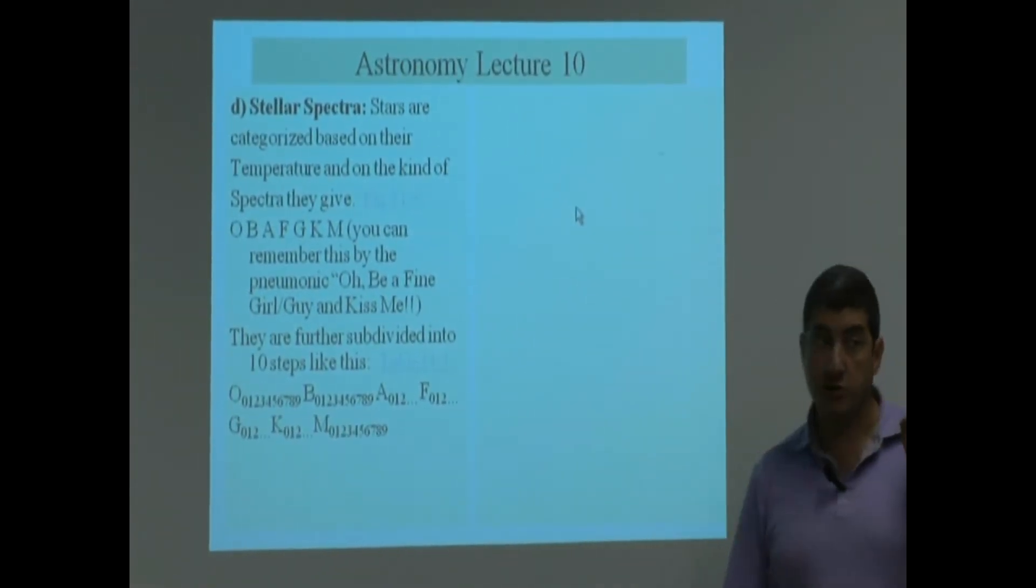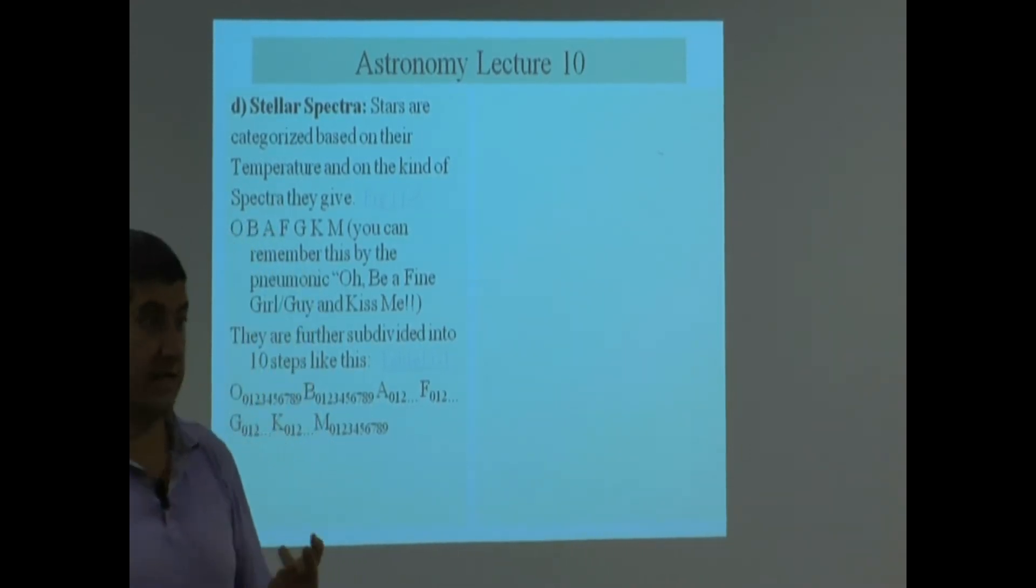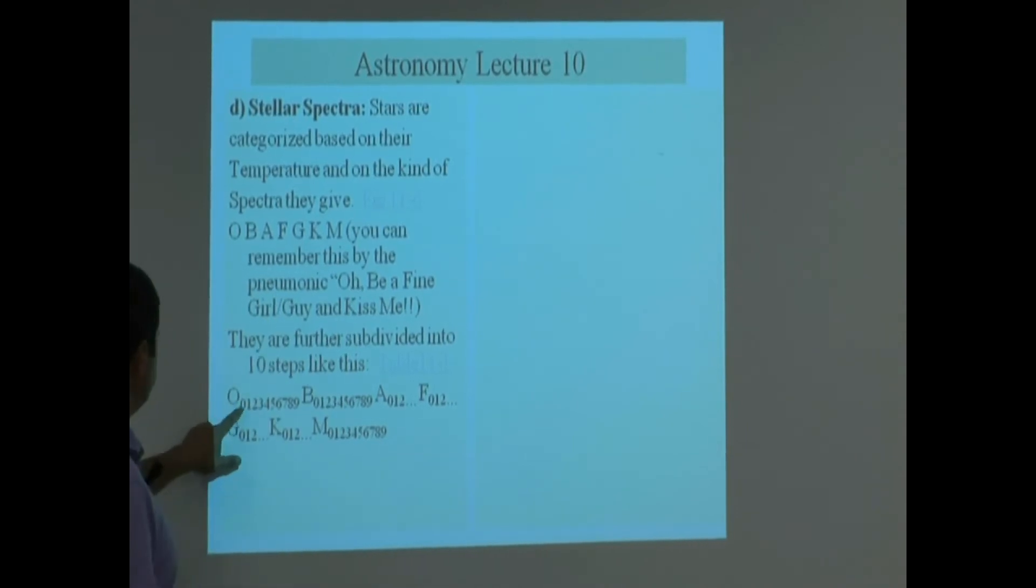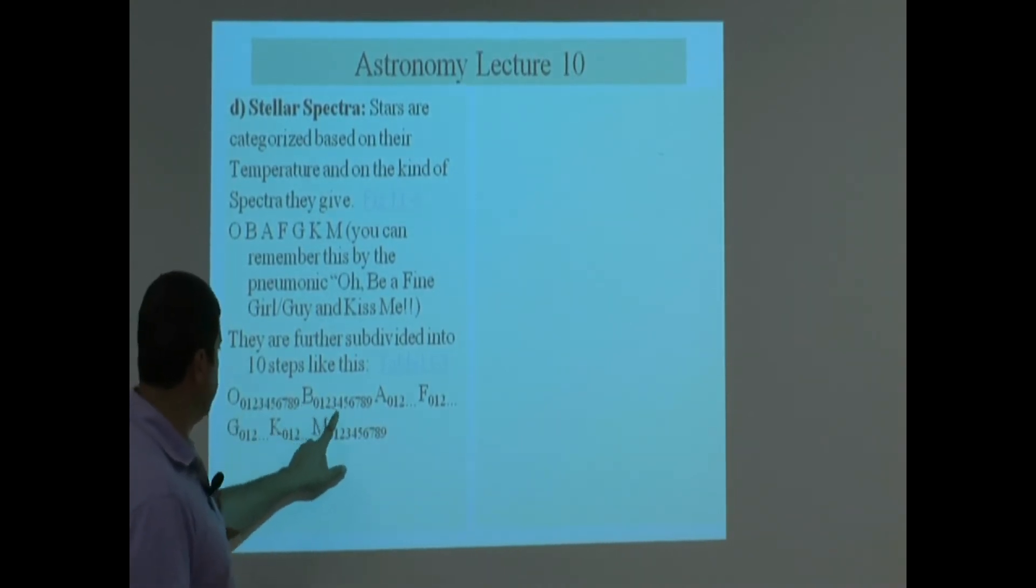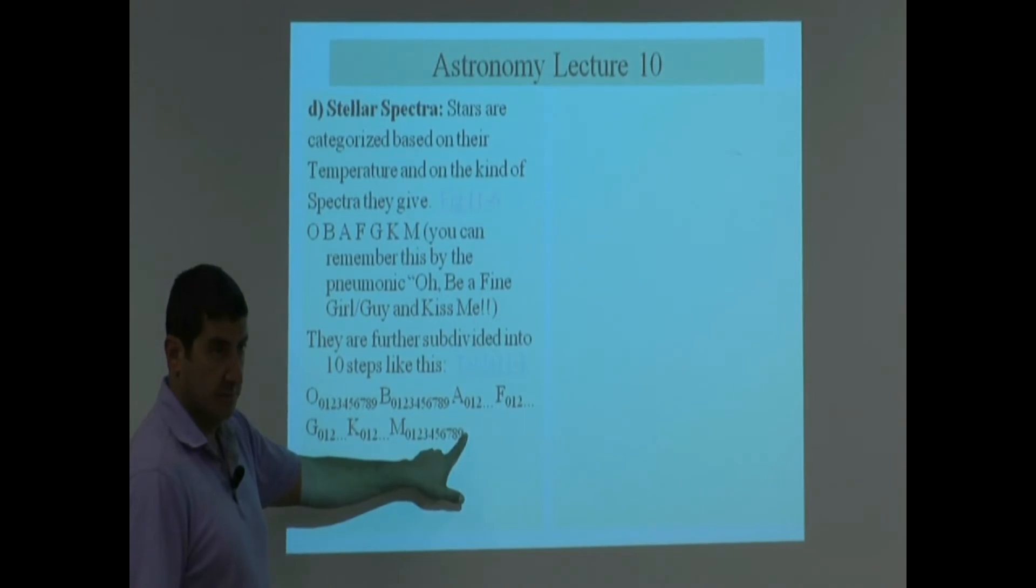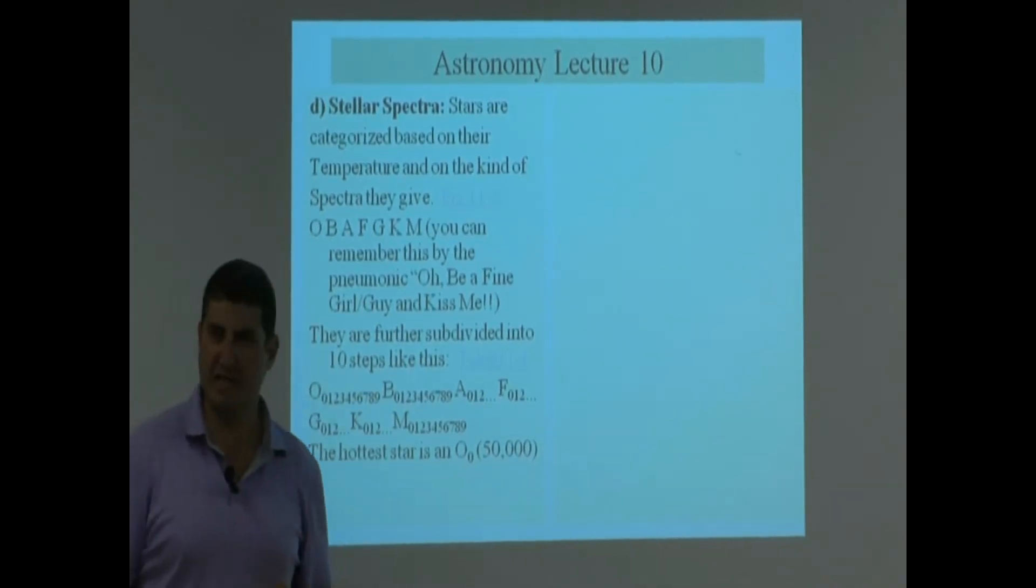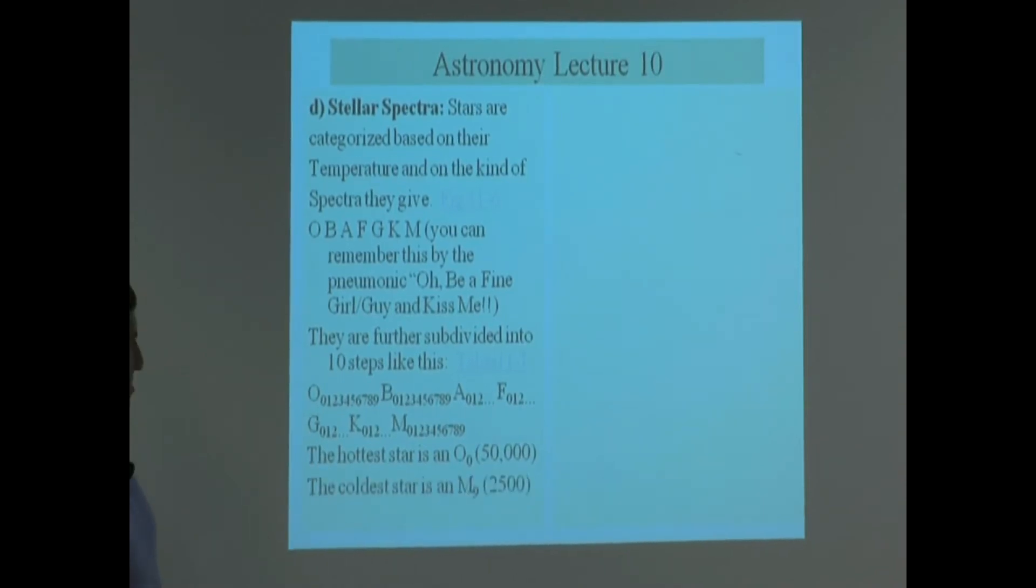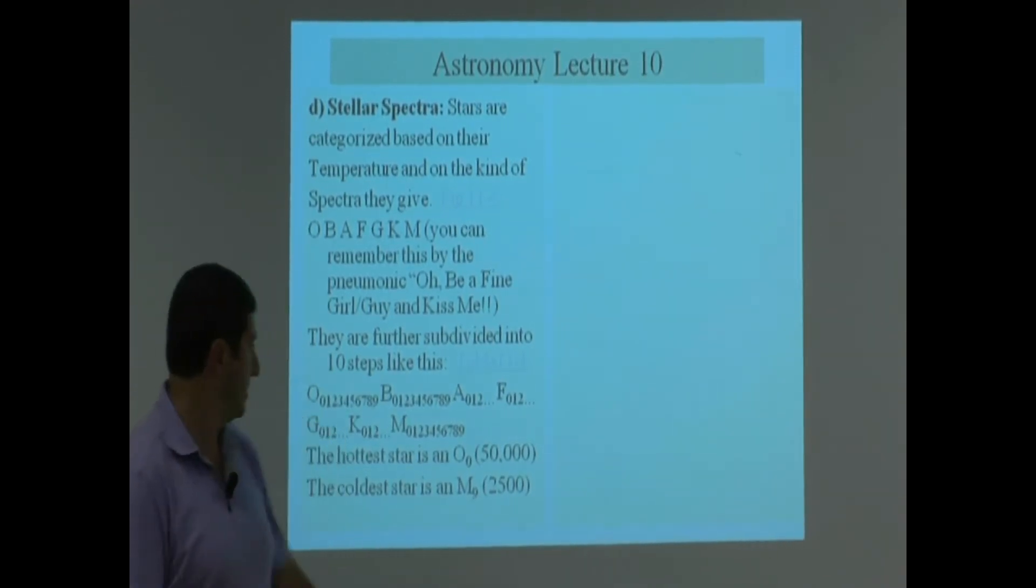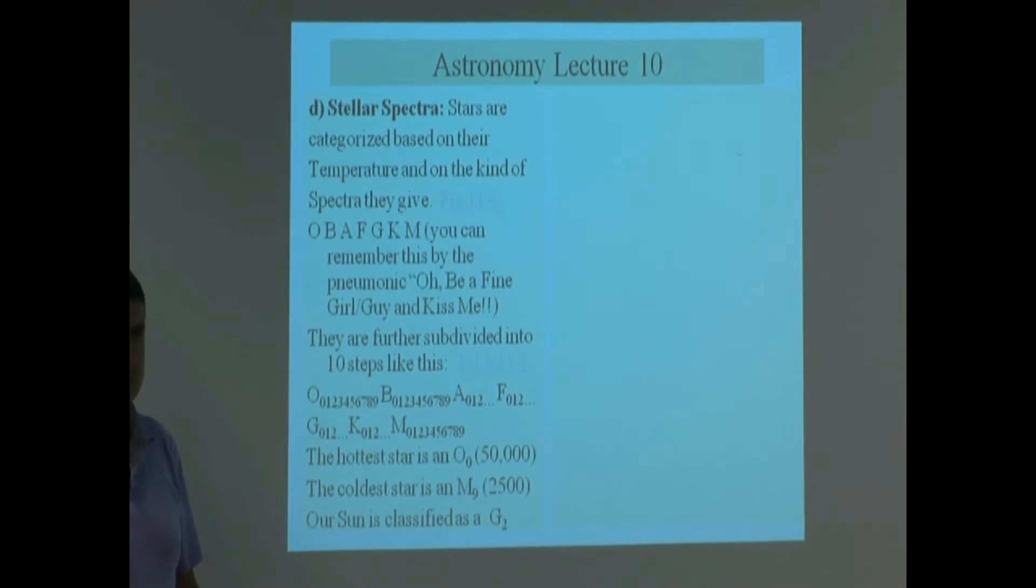So not only could they tell if a star was an O star, but they could even tell if the star was an O5 or O6. They got that good at it. So they subdivided it. O0, O1, O2, O3. They divided each of them into 10 parts. B0, B1, B2, B3, B9, A0, so on, so forth. And then M9. M9 is the coldest star. The hottest star is O0. So the O0 will roughly be around 50,000 Kelvin, about the hottest star. The coldest star is an M9, about the temperature of 2,500 Kelvin. And remember, that was about the coldest you could have.